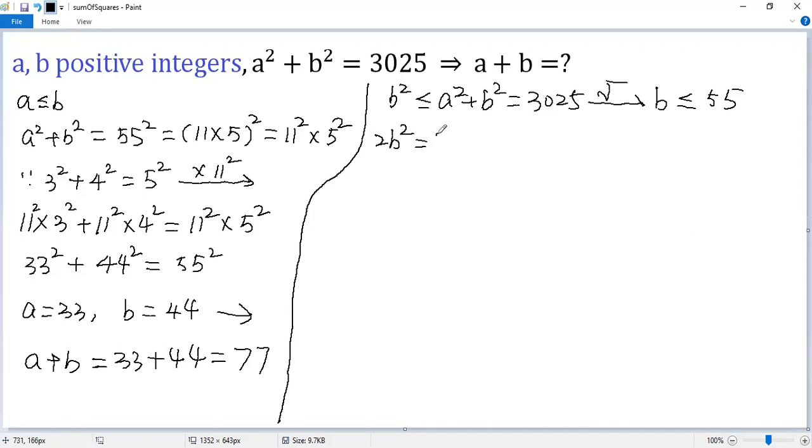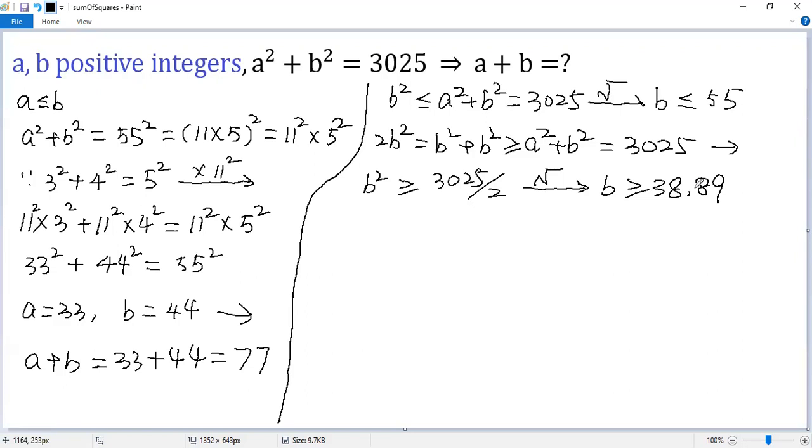On the other hand, 2b squared equals b squared plus b squared. That greater than or equal to a squared plus b squared, which is 3025. Both sides divided by 2. So we get b squared greater than or equal to 3025 divided by 2. Taking square root for both sides, so we get b greater than or equal to 38.89.